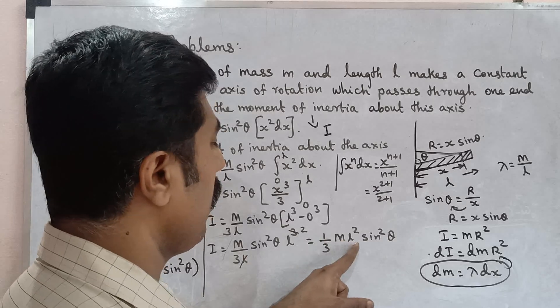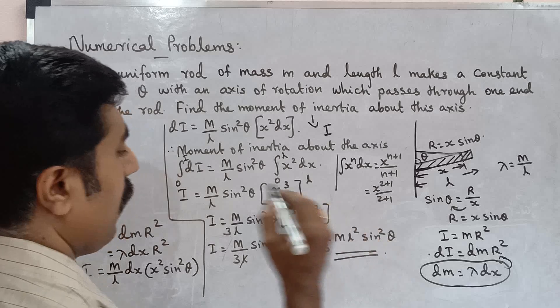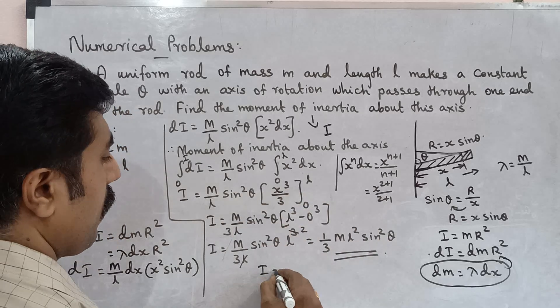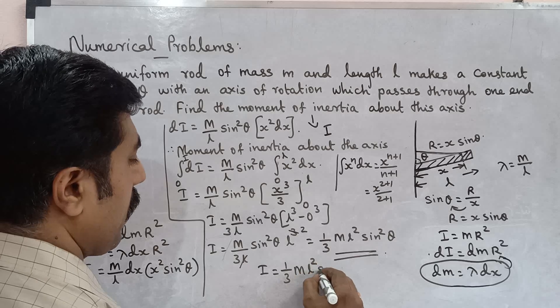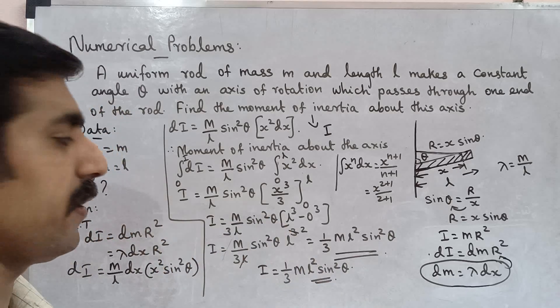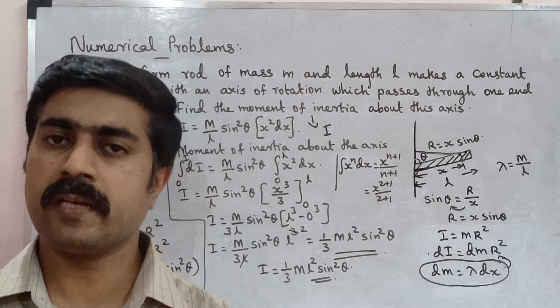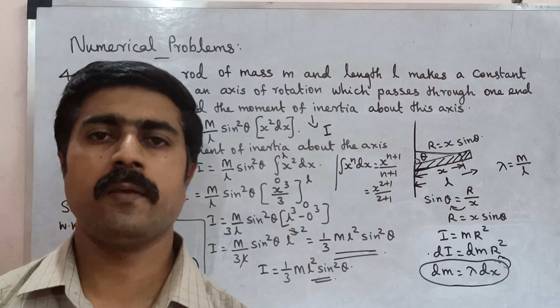Correct, 1 by 3 m L square sin square theta. I is equal to 1 by 3 m L square sin square theta. This is the moment of inertia equation, very simple. Practice and share, all the best, thank you.